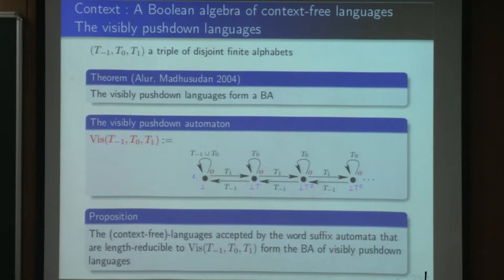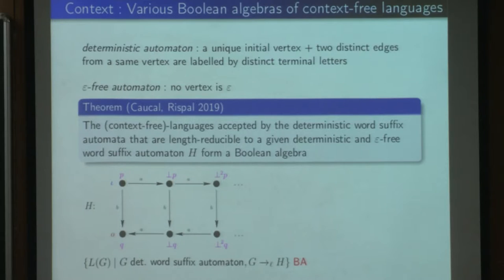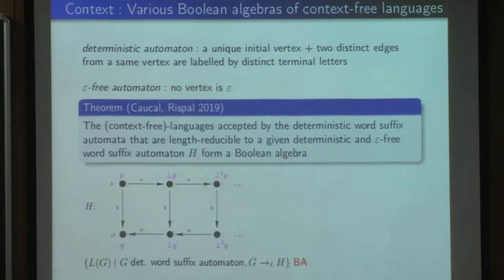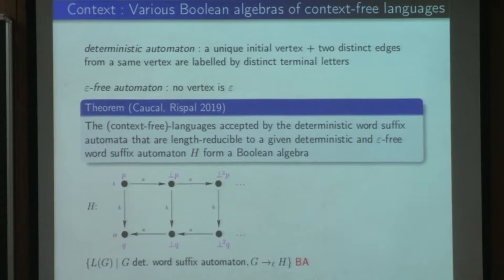There is a more general way to obtain Boolean algebras of context-free languages, due to Cocasl and Rispal. They show that you can choose any deterministic word suffix automaton H, and the context-free languages accepted by the deterministic word suffix automata that are length-reducible to H form a Boolean algebra. For example, we can choose an H that is no longer a visibly pushdown automaton, since A here both increases and decreases the stack.